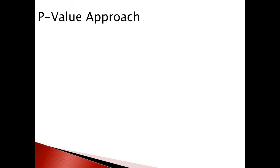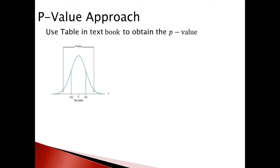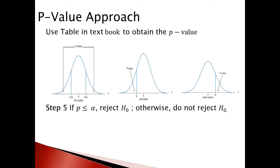Now we look at the p-value approach. In our textbook there is a table by which we can obtain the p-value. The first figure addresses the two-tailed case, the second the left-tailed, and the third the right-tailed. For step five using the p-value approach: if the obtained p-value is less than or equal to alpha, we reject H-naught; otherwise we do not reject H-naught.